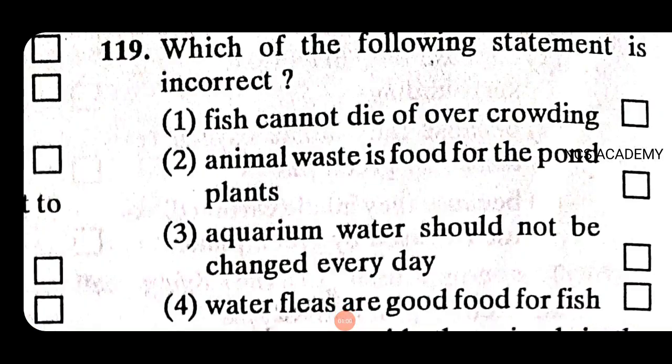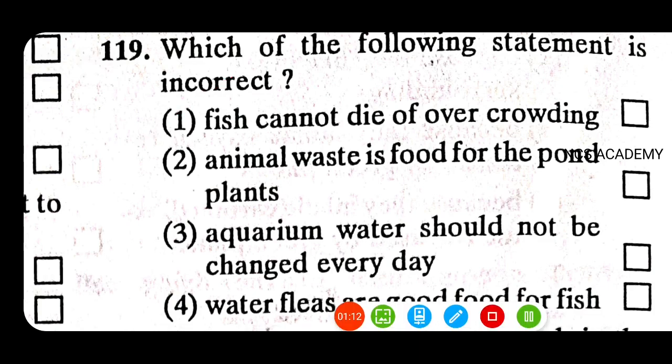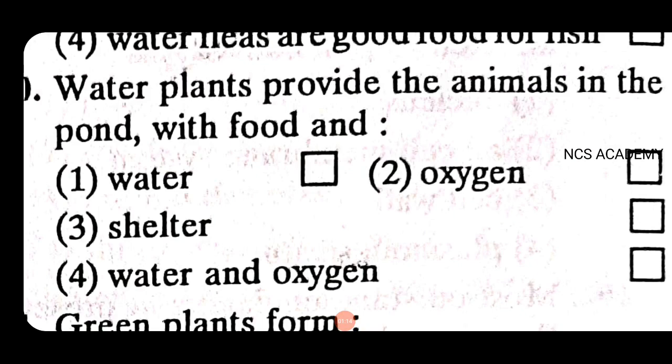Which of the following statements is incorrect? The fish cannot die of overcrowding — this is the right answer. Water plants provide the animals in the pond with food and oxygen.